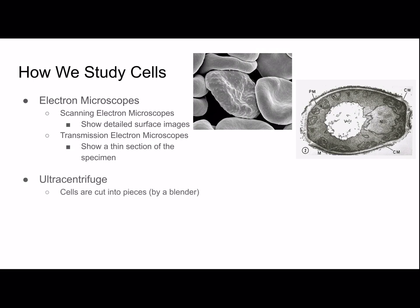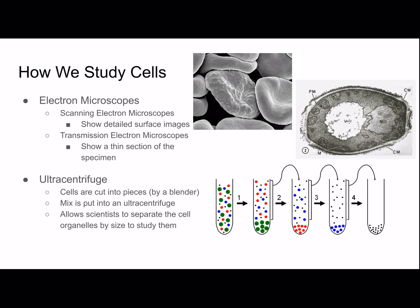Ultracentrifuge — the cells are put into a blender and cut up to be a mix. This mix is then put into an ultracentrifuge, which is basically a device that spins them very quickly. This allows scientists to separate cell organelles by size in order to study them. As you can see in this image, they start with a mix of all the organelles of different sizes, and then after being spun for a certain amount of time at a certain speed, the heaviest organelles fall to the bottom and can be removed and studied. The rest of the mixture gets poured into the next test tube and the process continues until everything is sorted by size.